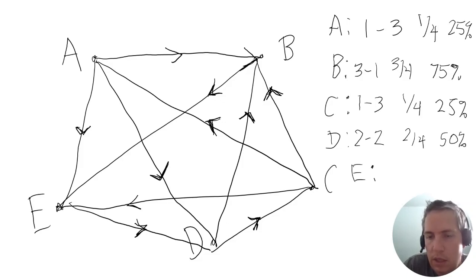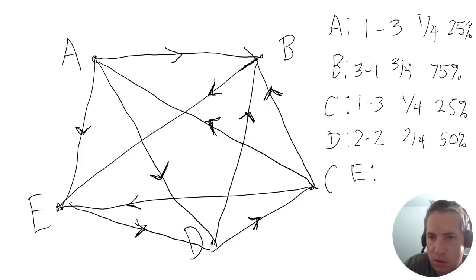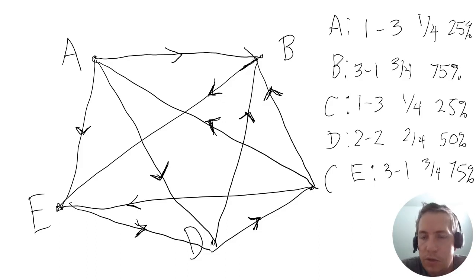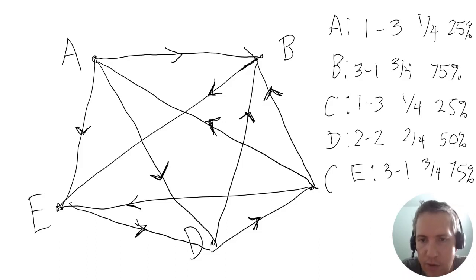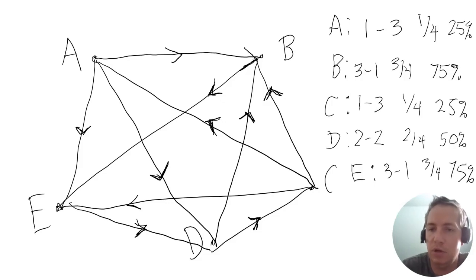E won against A, B, and C, but lost to D — that's three and one, so three out of four or 75%. This allows us to see that B and E had the highest percentage of wins, then D, and then A and C tied for the lowest. So is there a way to use this to figure out the ordering? It turns out yes, and this is called the winning percentage — you give the highest winning percentage the highest ranking.